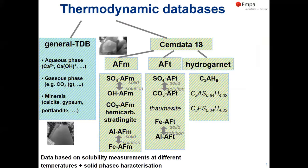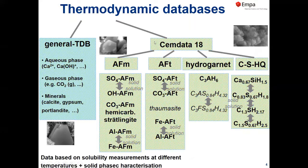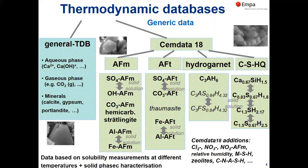Looking more closely at the databases: in the CEMDATA database we have data for AFM phases (aluminium iron mono phases), AFT phases (aluminium iron tri phases) like ettringite, hydrogarnet, CSH phases, and many of them form solid solutions. We continue to work on the database — every few years we add additional data. Recently we've added chloride, nitrate, AFM data, relative humidity, MSH, and zeolites. A database is never completely finished.